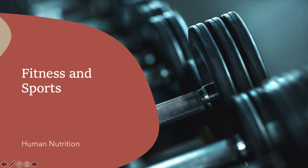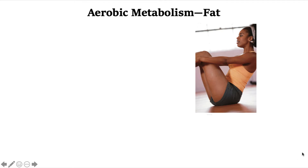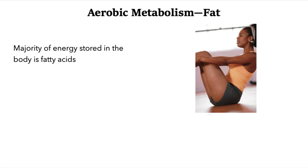Welcome back to part two of fitness and sports in our human nutrition course. We're going to start out talking about the metabolism of fat, and in particular we call this aerobic metabolism, because in order to break down fat to use it as an energy source, oxygen must be present. When we break down fat, it's broken down into a chemical referred to as a fatty acid. The majority of energy is stored in the form of these fatty acids, and they can be used to produce ATP energy.